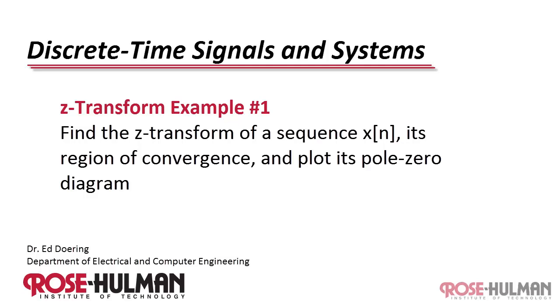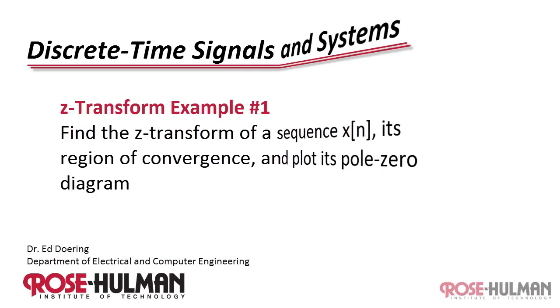This is Z-transform example number one. Find the Z-transform of the sequence, its region of convergence, and plot its pole-zero diagram.